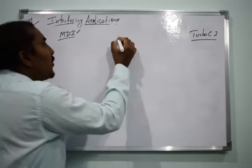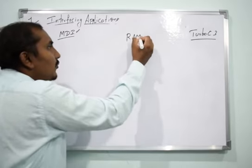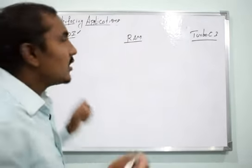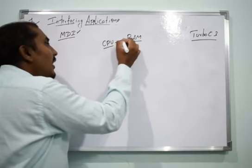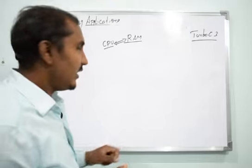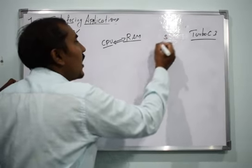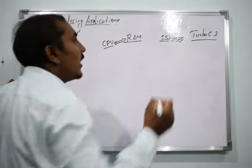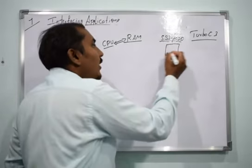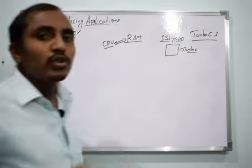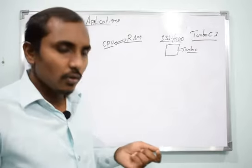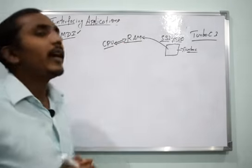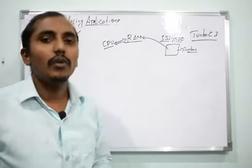Now let me explain the advantages of MDI. First, let's understand RAM. RAM is random access memory, also called primary memory. The CPU can access data stored in RAM easily. If you have software like Turbo C on a hard disk or SSD, it must first be loaded onto RAM before the CPU can execute it.